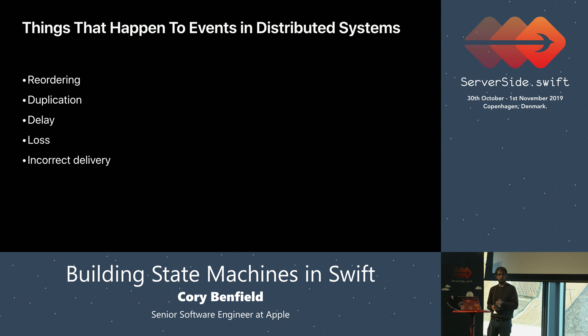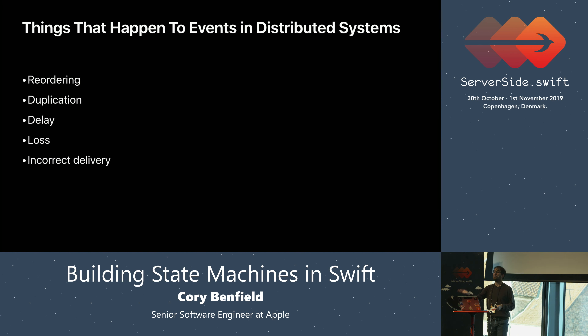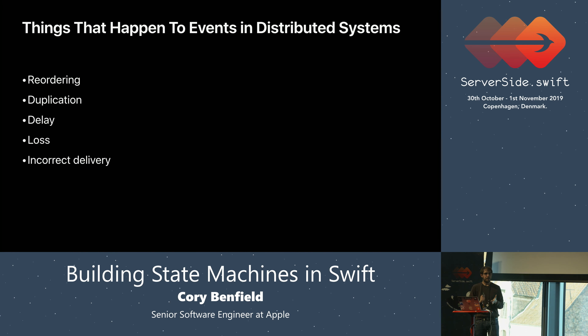Distributed systems could be politely described as adversarial and impolitely described as actively demonic. Events can be reordered: you send event A then B, the recipient receives B then A. They can be duplicated: you send A, the recipient gets A and then A again. They can be delayed: you send A, the recipient waits 25 seconds. They can be lost entirely — the same as being delayed infinitely. They can also be incorrectly delivered: you addressed your input to system X, but system X crashed and moved to a different node, and now system Y gets your event A.